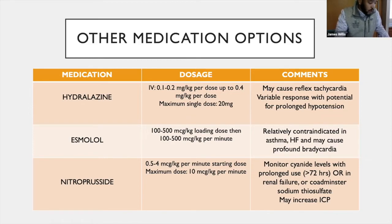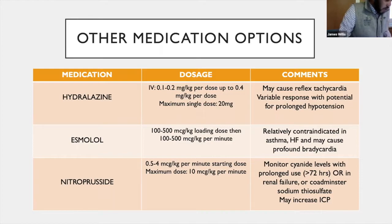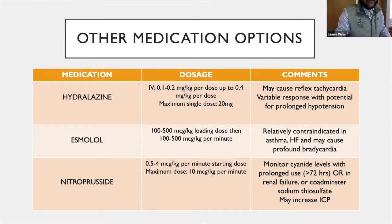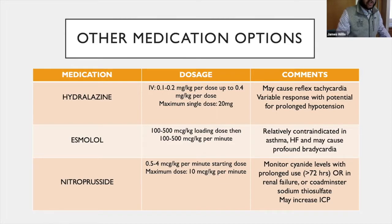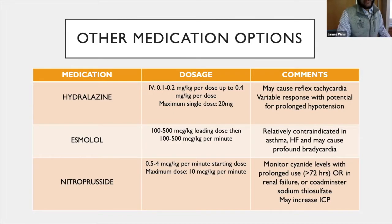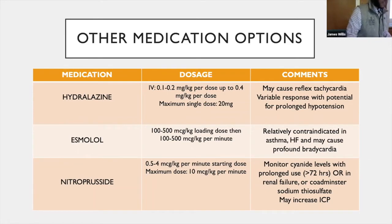Esmolol has a rapid onset and can be useful in certain patient populations, especially those who have just had cardiac surgery. It is metabolized in the bloodstream, making it safe for patients with kidney or liver disease, but it's relatively contraindicated in patients with asthma and may cause profound bradycardia. Lastly, nitroprusside was previously more commonly used but is now largely avoided due to the risk of cyanide toxicity, particularly with prolonged use beyond three days or in patients with renal failure. You may need to co-administer sodium thiosulfate, and it may also increase intracranial pressure.